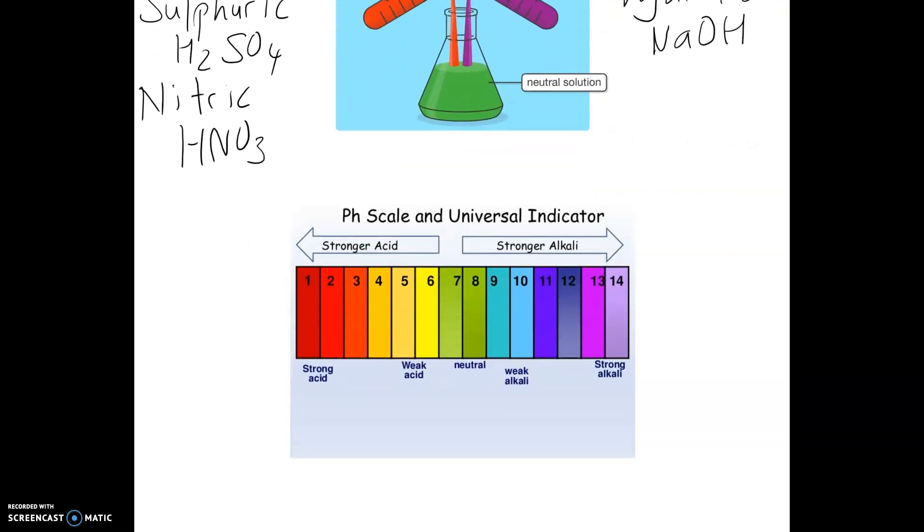Now, depending on the strength of the acid, the color will go either lighter or not be as bright. How does universal indicator work? If I add my universal indicator, you can see...